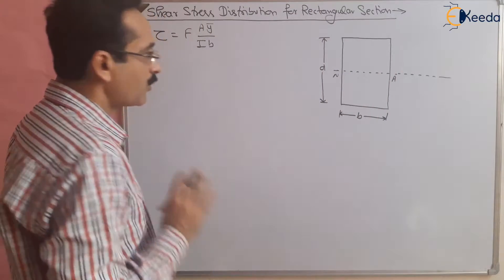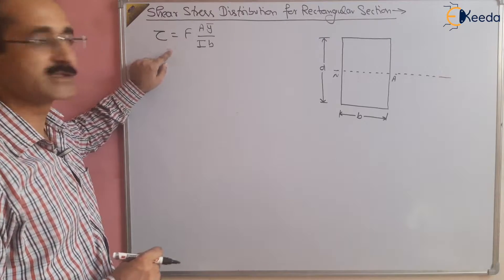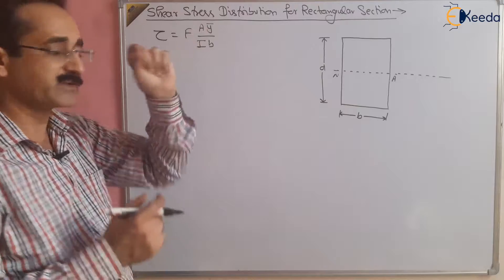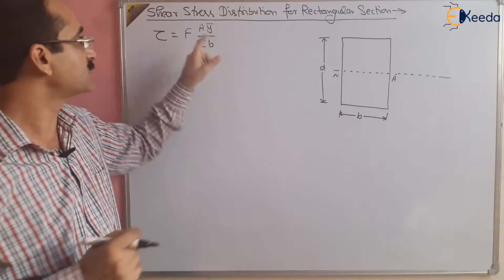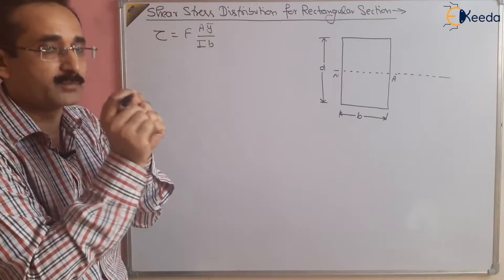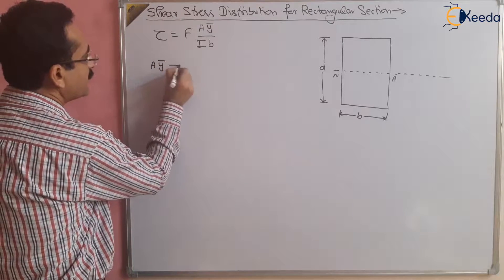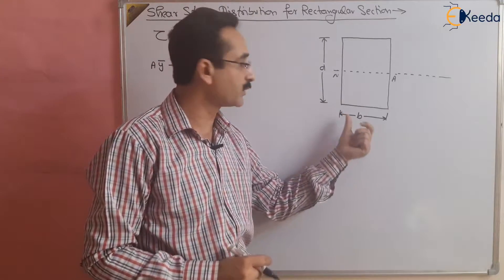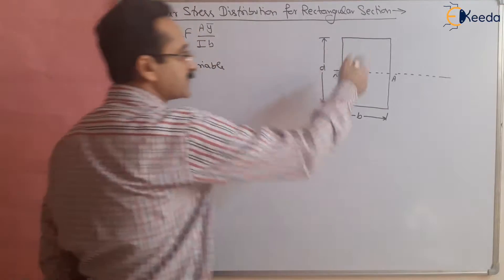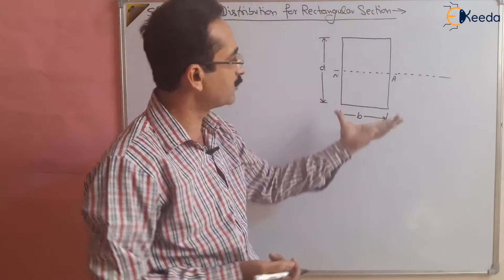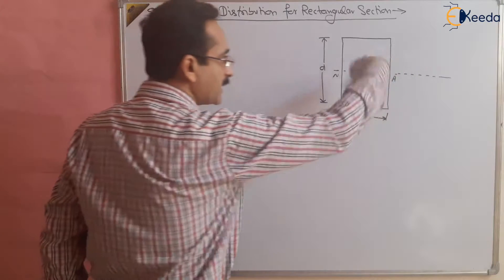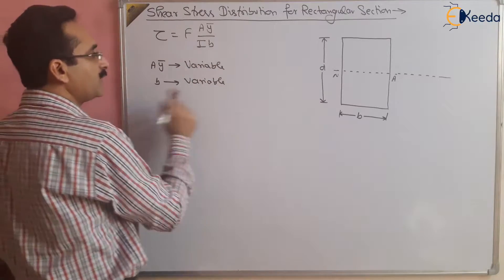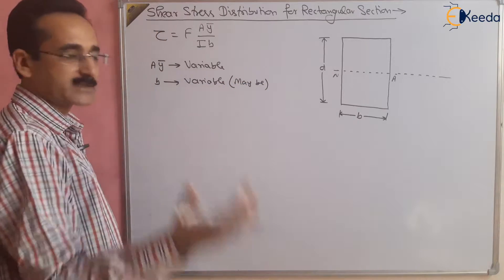What is the shear stress distribution? When we were deriving this equation, tau = FAȳ/Ib, there were some unknowns — some variables. Aȳ was the moment of a small strip about the neutral axis, so A and ȳ are variables. There may also be cases where B is variable. For rectangular sections, B is not variable, but for triangular sections the width varies from small at the top to larger at the bottom, and for circular sections B is also variable.